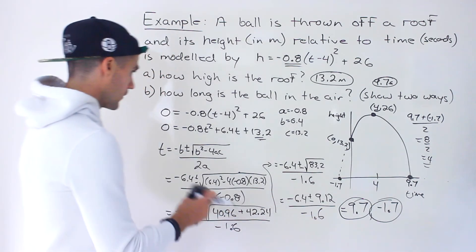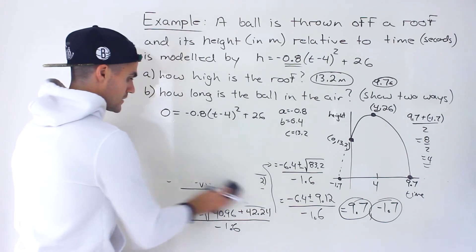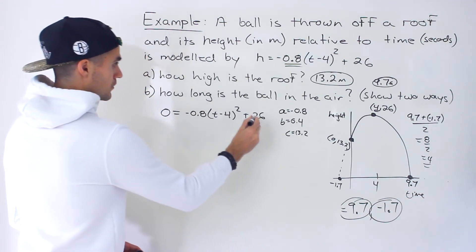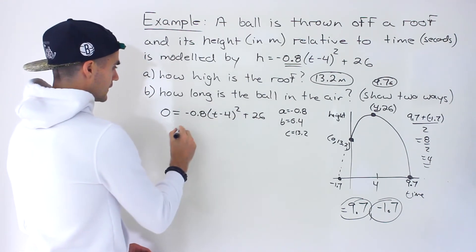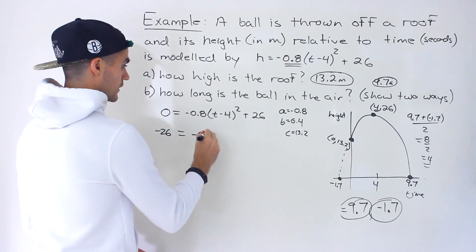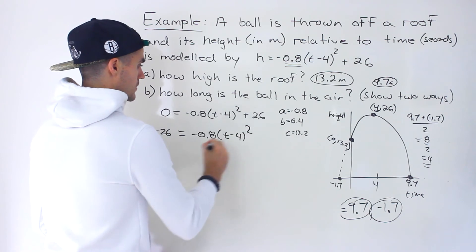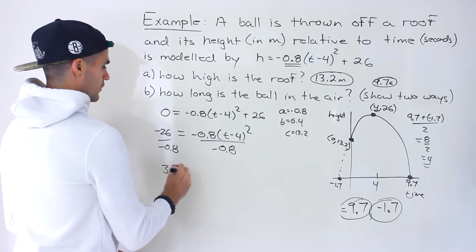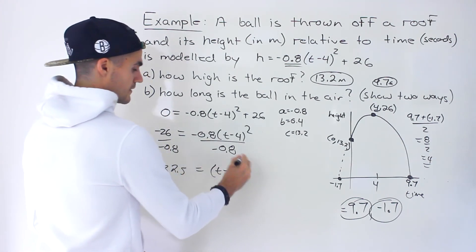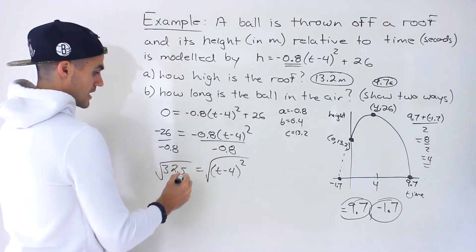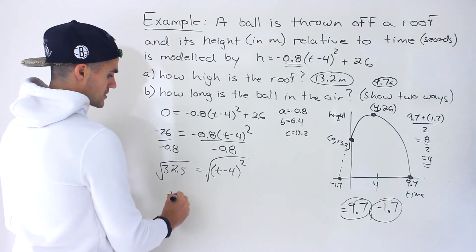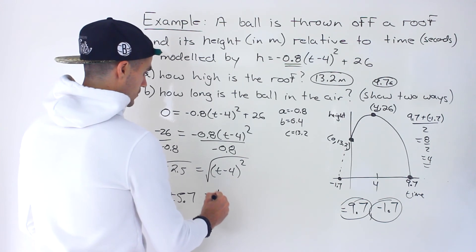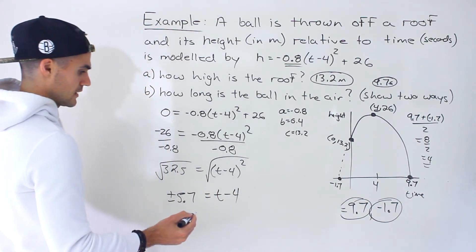All right. So this is one way to do it. Let's see if we get the same values with the other way. So the other way, what we would do, we would bring the negative 26 over. So we'll have negative 26 over here. Then we'll have negative 0.8(t minus 4)². Then we could divide both sides by negative 0.8. This would be 32.5 and we'll have (t minus 4)². Then to get rid of this exponent 2, we could just square root both sides. Square root of 32.5 is going to be approximately plus or minus 5.7 and then we'll have t minus 4.